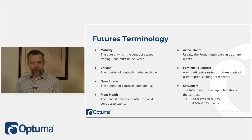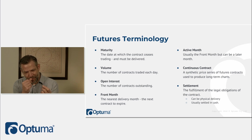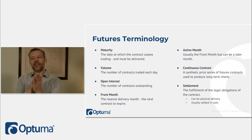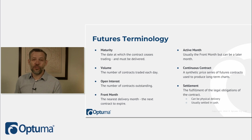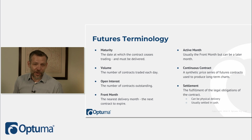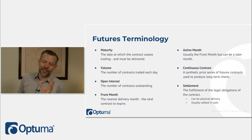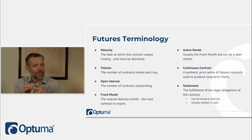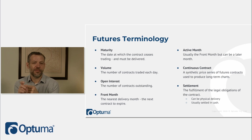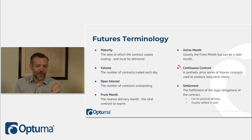Key terminology: maturity, like bonds, is the date the contract ceases and goods must be delivered. Sometimes goods aren't actually delivered — it's settled in cash. However, for physical commodities like wheat, if you held the contract to expiry and didn't on-sell it, truckloads of wheat could theoretically be delivered. Nowadays, contracts are usually settled for cash at the prevailing price — one person makes money, one loses. Maturity is the date the contract ceases.